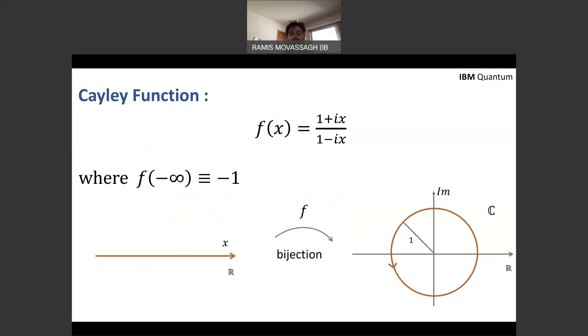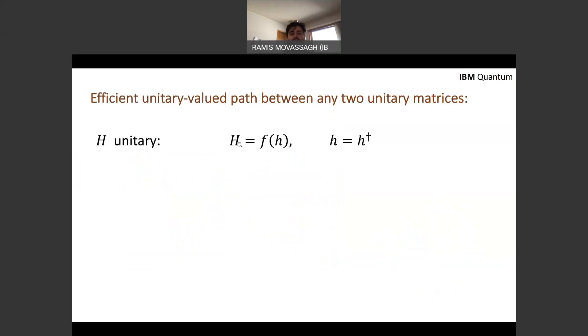So I told you polynomials are not good enough. And that's why Cayley path was introduced in this earlier paper, which is essentially a bijection. This is the Cayley function. It's a bijection between the real line and the unit circle in the complex plane. And if you have a random Haar unitary H of size N, capital N, capital N being two or four, say four by four or two by two, then there exists a self-adjoint little h for which capital H equals F of little h.